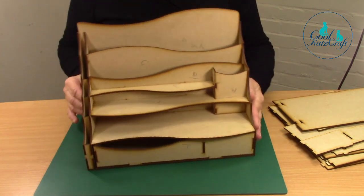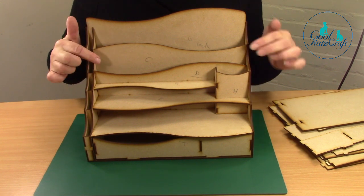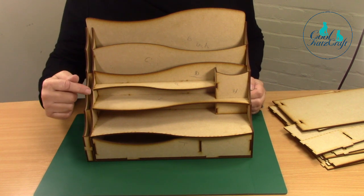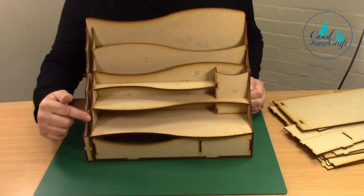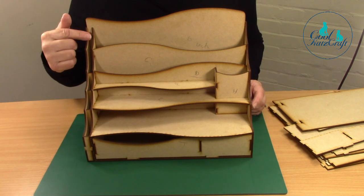So what we have here, we have vertical storage slots here and here. We have a pot for keeping your pens and pencils and things in. Some lovely divided storage slots here, perfect for scissors, rulers, spatulas, whatever you fancy really.